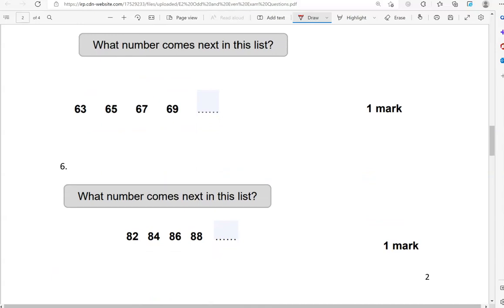What number comes next in this list? 63, 65, 67, 69, 71. Again, we're adding 2 each time. So from 69, we're going to 70 and then 71.